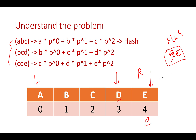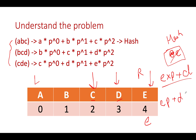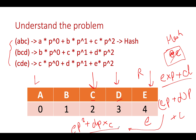Moving left, we see 'd': hash = e·p + d. Then we see 'c': hash = (e·p + d)·p + c = e·p² + d·p + c. This is the hash for the substring 'cde' of length 3, which matches our expectation.